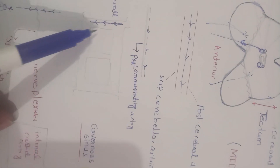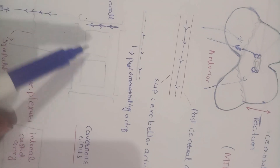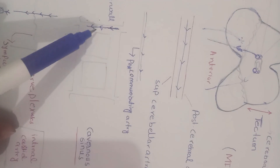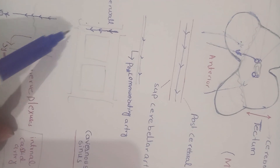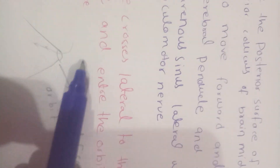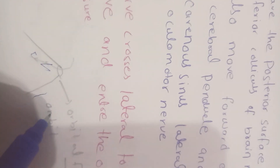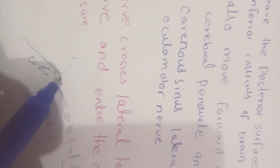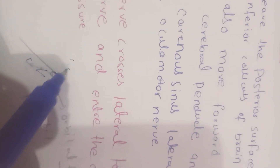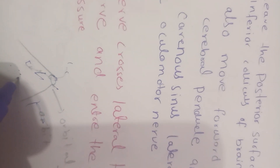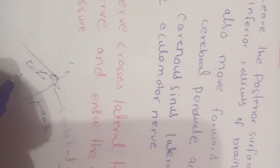Then after passing through the cavernous sinus, it crosses the oculomotor nerve and enters into the orbit through the superior orbital fissure. From the superior orbital fissure, it enters into the orbit and supplies the superior oblique muscle.